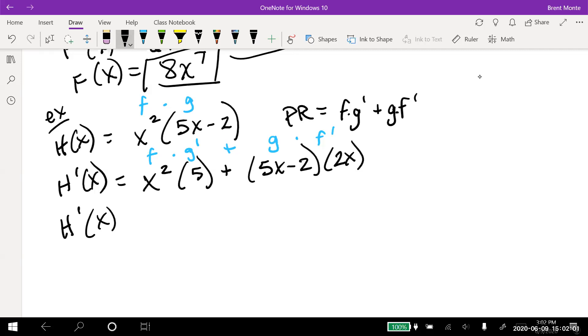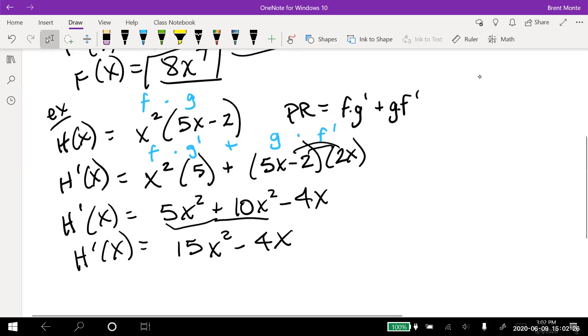So I get h'(x), I'll distribute it in here, 5x² plus 10x² minus 4x. And then it just cleans up, combine like terms, I get 10x²—oops, that didn't simplify anything. Let's actually add that to the 5x². So I'll add those two together, you get 15x² minus 4x. And that is my answer.